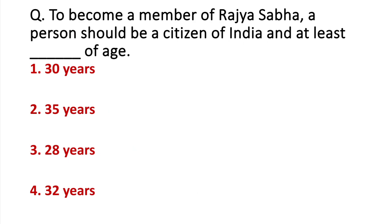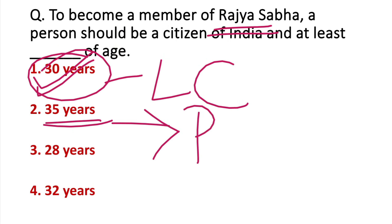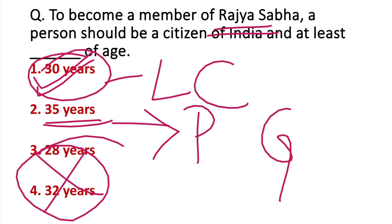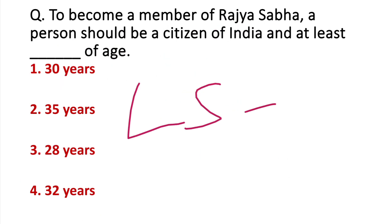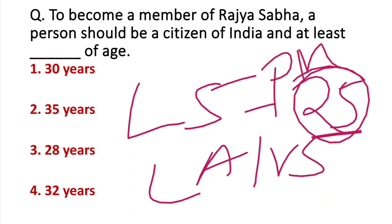To become a member of Rajya Sabha, a person should be a citizen of India and at least 30 years of age. For the legislative council, the minimum age is also 30 years. For President and Governor, there are different criteria at 35 years. For Lok Sabha, the minimum age is 25 years. For the legislative assembly (Vidhan Sabha), it is also 25 years. The Prime Minister is from Lok Sabha, so the minimum age there is 25 years.